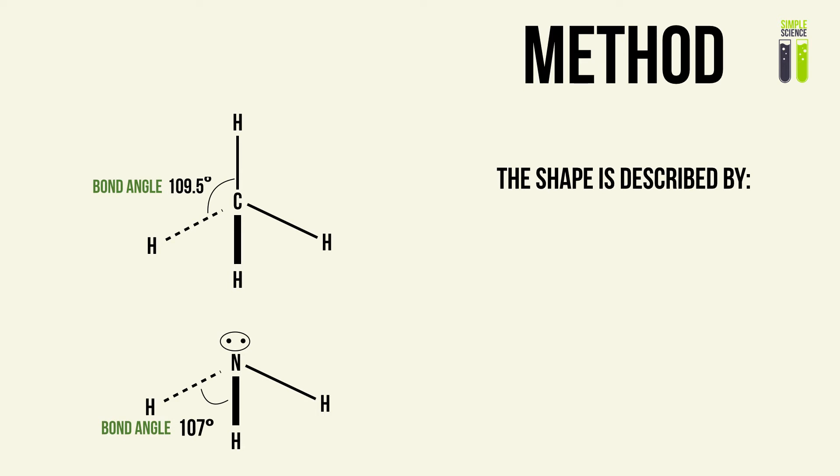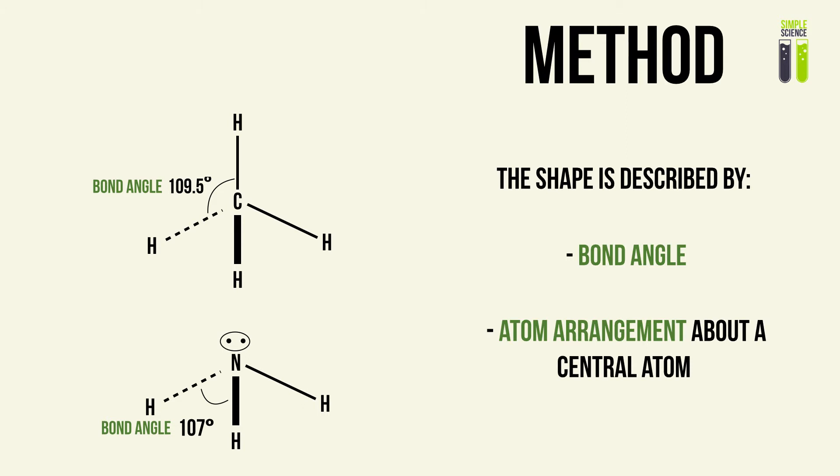The shape of a covalent molecule is described by two features. The first feature is the bond angle — essentially the angle subtended between two covalent bonds, as you can see in the left diagrams. The other thing is the atomic arrangement about the central atom, and we often use a name of a shape to describe the orientation or arrangement in which the atoms will arrange about the central atom.